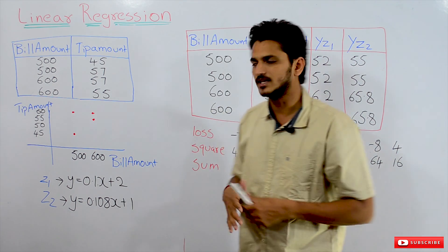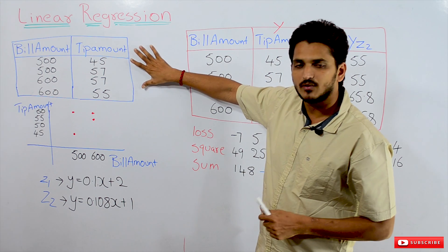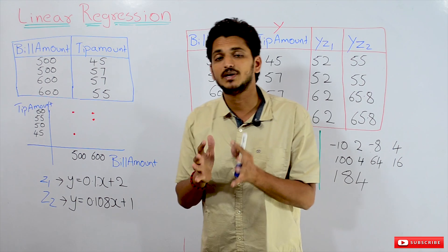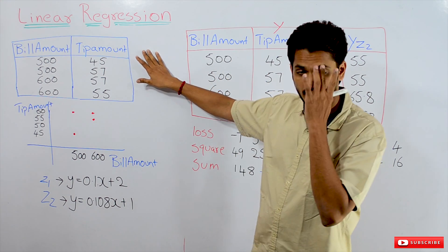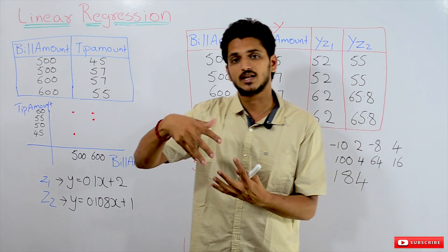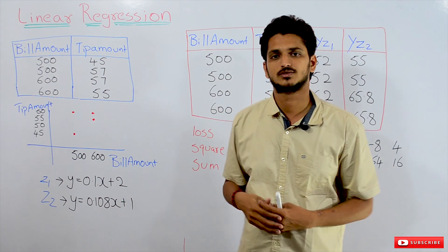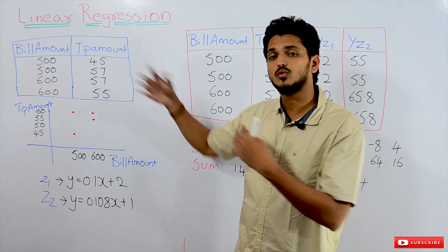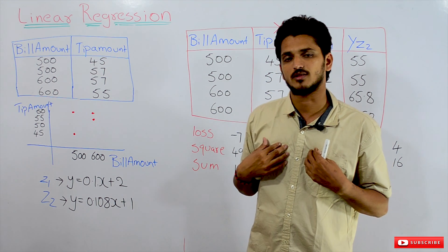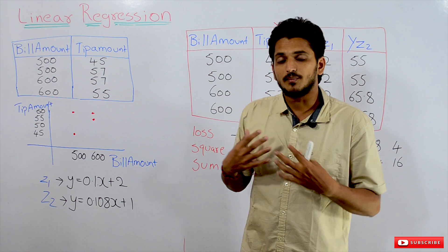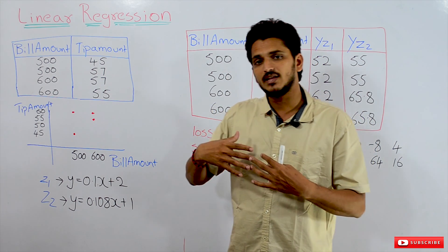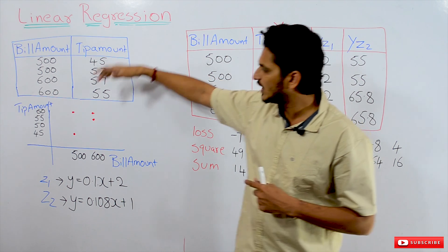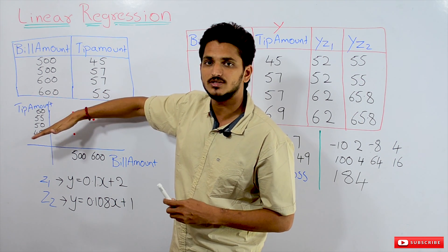Let's understand with an example. The data we collected — for simplicity of mathematics, we collected only four data points. In reality, we will collect thousands and thousands of points. Based on this collected data, we have to identify a mathematical formulation. In linear regression, we have to identify a line passing through this data.